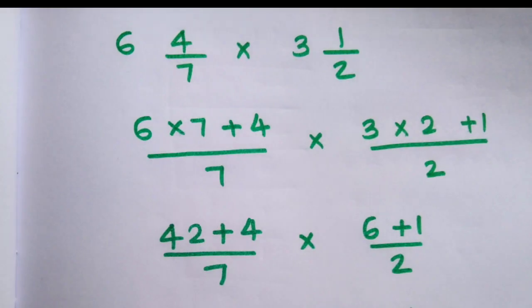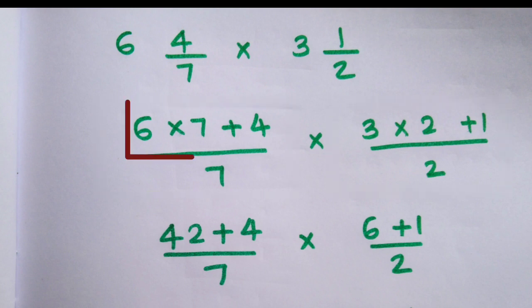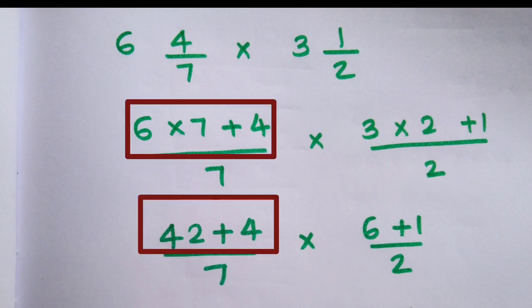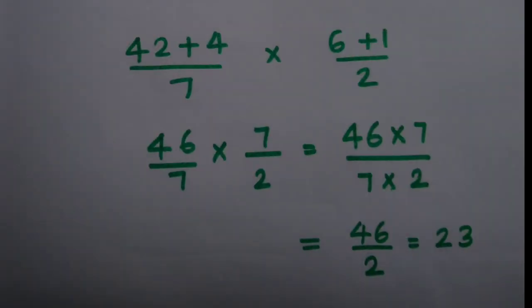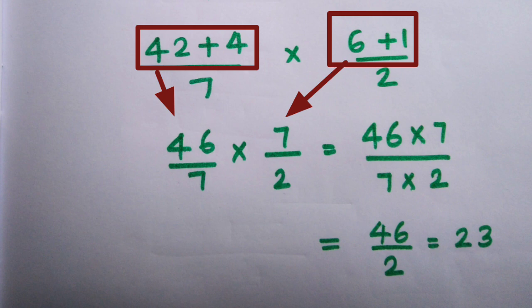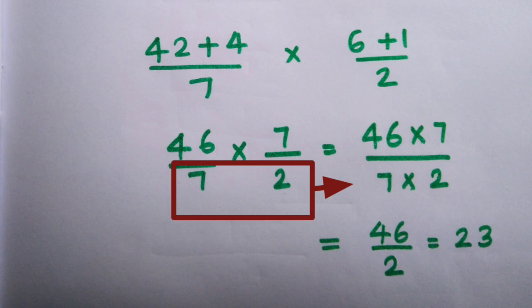Next one is two mixed fractions: 6 4/7 multiplied by 3 1/2. Convert into improper fractions: 6 into 7 plus 4 divided by 7, and 3 into 2 plus 1 divided by 2. Multiply: 7 times 6 is 42, plus 4, divided by 7; and 3 times 2 is 6, plus 1, divided by 2. Then add: 42 plus 4 is 46, and 6 plus 1 is 7. So we have 46/7 multiplied by 7/2. Multiply the numerator 46 and 7, and the denominator 7 and 2.